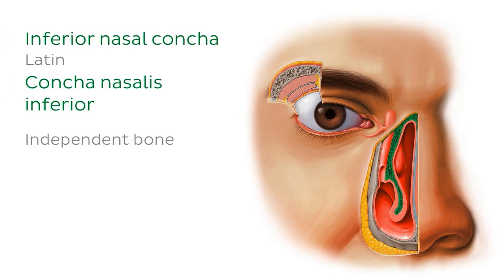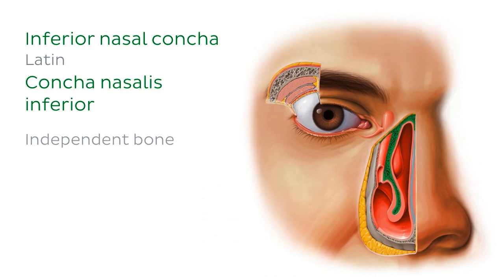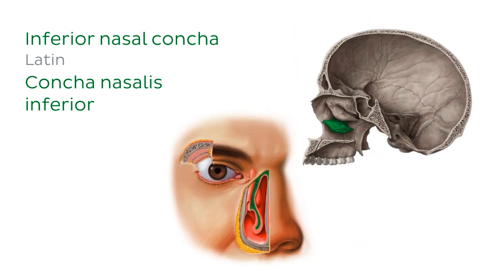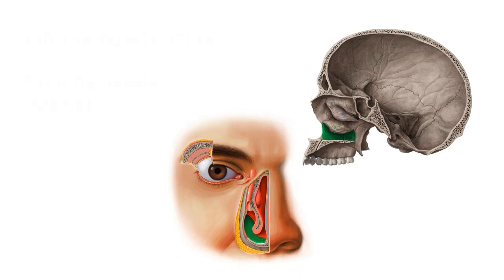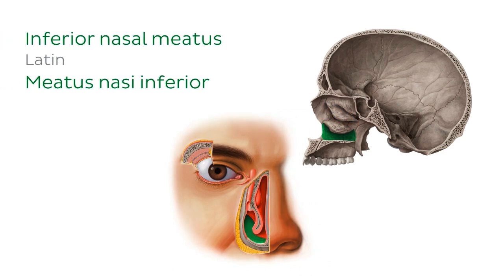The inferior nasal concha is an independent bone rather than a projection of another. Similar to the middle nasal concha, it projects medially into the nasal cavity, leaving a space beneath it. In this midsagittal section we can see the inferior nasal concha inferior to the middle nasal concha identified earlier. The space beneath the inferior nasal concha is called the inferior nasal meatus, which is an important space in the lacrimal apparatus, serving as the end or drainage point of the system.